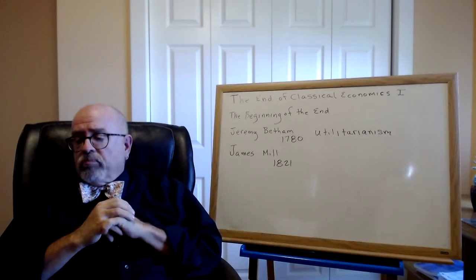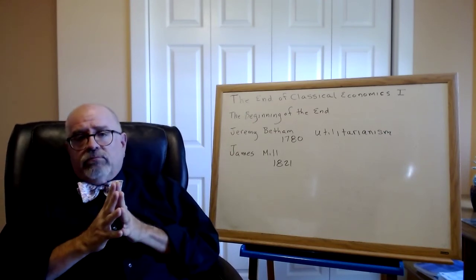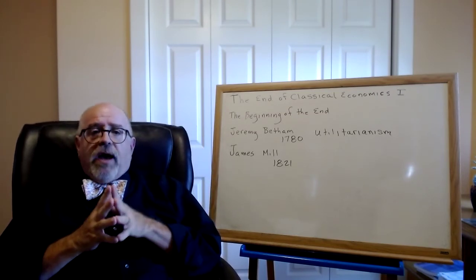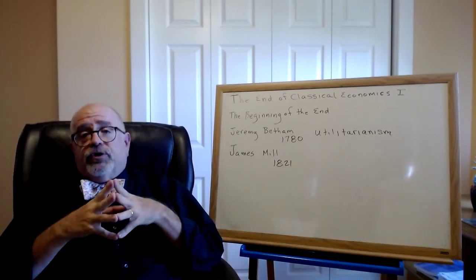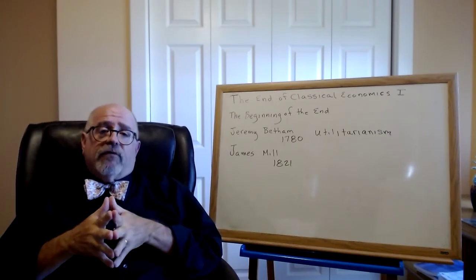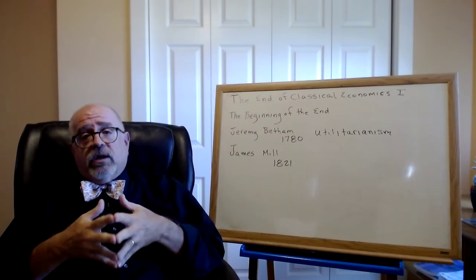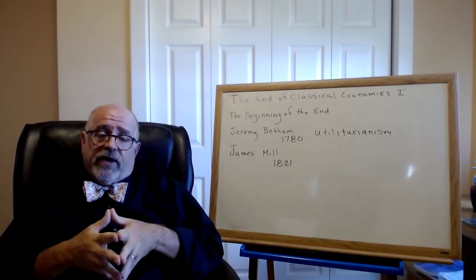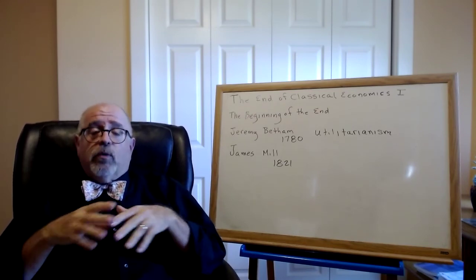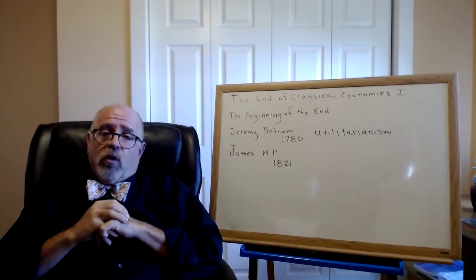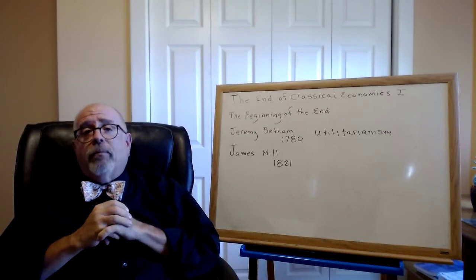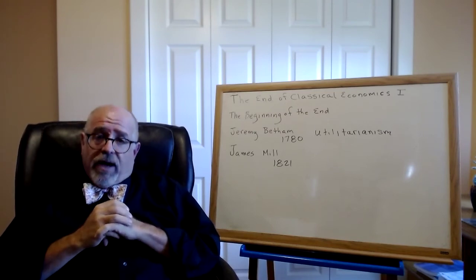Now Bentham was a full-tilt bozo — he was crazy. One time he was talking to James Mill in a park in London and suddenly took off running back to his house. James Mill, his friend, assumed something was terribly wrong and followed. When he got to Bentham's house, he found Bentham sitting in front of a portrait of himself. When he asked what was wrong, Bentham said he just couldn't go another minute without gazing upon himself.